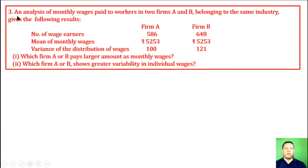Question number 3. An analysis of monthly wages paid to workers in two farms A and B belonging to the same industry gives the following results: Farm A has 586 wage earners, Farm B has 648. Mean of monthly wages for Farm A is Rs 5253, Farm B is Rs 5253. Variance of distribution of wages is 100 and 121. (i) Which farm A or B pays larger amount as monthly wages? (ii) Which farm A or B shows greater variability in individual wages?